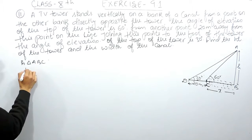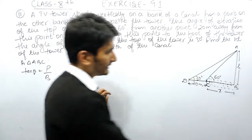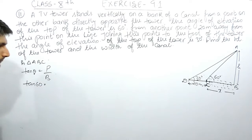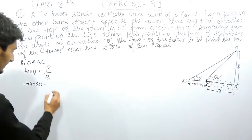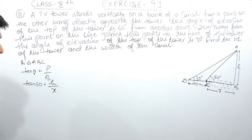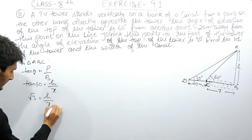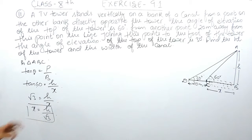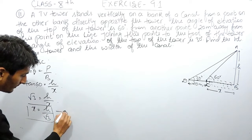In the first triangle ABC, which is the smaller triangle, tan θ equals perpendicular upon base. Here θ is 60 degrees, so tan 60° equals h upon x, where h is the height of the tower and x is the base (width of the canal). The value of tan 60° is √3, so √3 = h/x, which gives x = h/√3. This is our first equation.